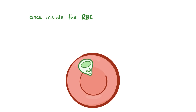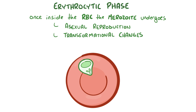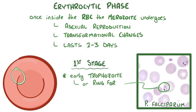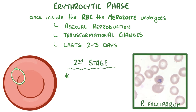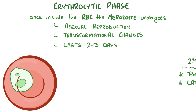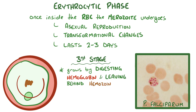Once inside the red blood cell, the merozoite undergoes asexual reproduction and a series of transformational changes. This phase is known as the erythrocytic phase of malaria and generally lasts 2–3 days. In the first stage, the merozoite looks like a tiny ring within the red blood cell and is called an early trophozoite or ring form. In the second stage, the ring form grows and is referred to as a late trophozoite. In the third and final stage, the parasite grows by digesting hemoglobin and leaves behind hemozoin, which under a microscope looks like a brown smudge on a red blood cell — at this point the parasite is called a schizont.